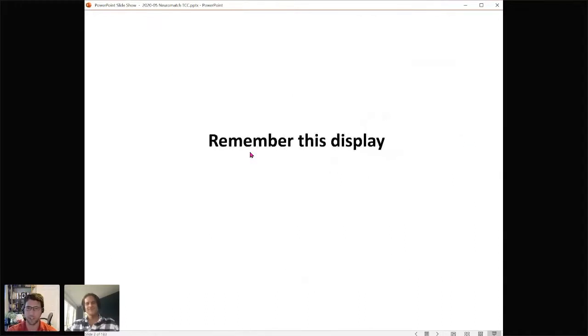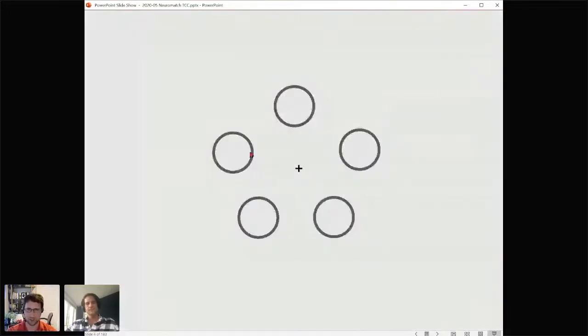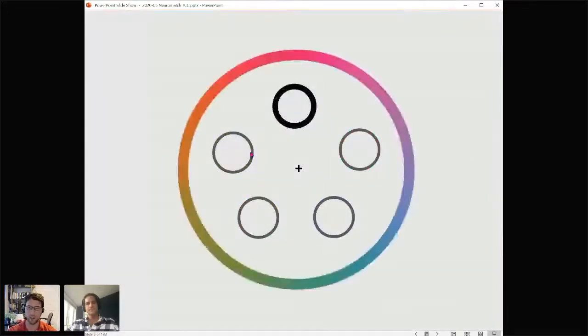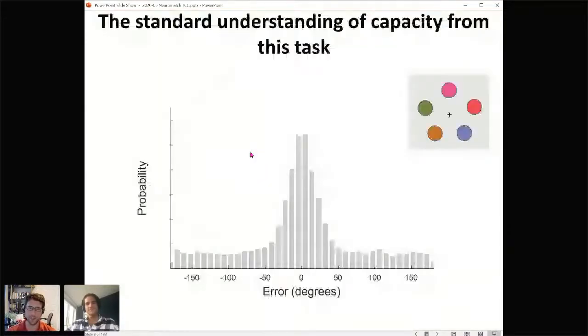So to start, let's talk about the task. Remember these five colors as best you can, and then after some delay I'll probe you on one location, in this case the top one, and your job is to say what color you saw. This task has been really well studied, this is just a psychophysical continuous adjustment task. The data you get out looks something like lots of errors near zero, those are accurate responses, and then this really long fat tail of errors.